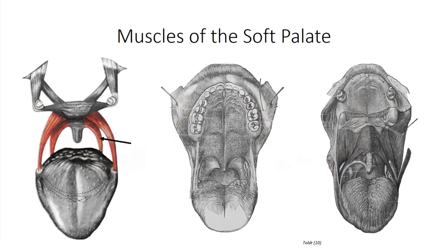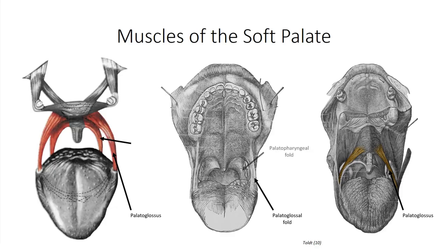The final two muscles project inferiorly from the soft palate to the tongue and oropharynx, creating folds visible on inspection of the oral cavity. The more anterior is the palatoglossal fold, which runs from the soft palate to the base of the tongue and is created by the palatoglossus muscle, which contracts to either depress the soft palate or elevate the tongue. Posterior to this is the palatopharyngeal fold, created by the palatopharyngeus muscle, which serves to depress the soft palate or elevate the pharynx, depending on the muscles it works synergistically with.